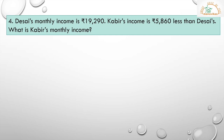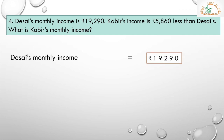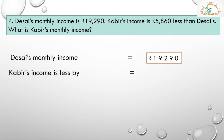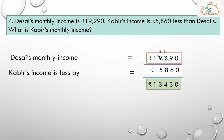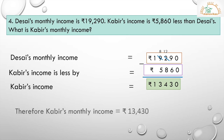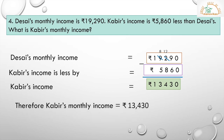Here is the solution. The size monthly income is equal to Rs. 19,290. Kabir's income is less by Rs. 5,860. Do the subtraction. Regroup the places. 0 minus 0 is 0. 9 minus 6 is 3. 12 minus 8 is 4. 8 minus 5 is 3. And 1 comes down. Therefore, Kabir's monthly income is equal to Rs. 13,430.